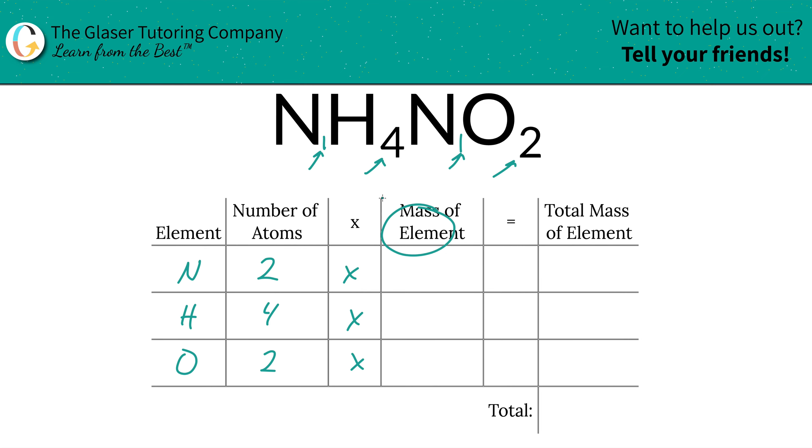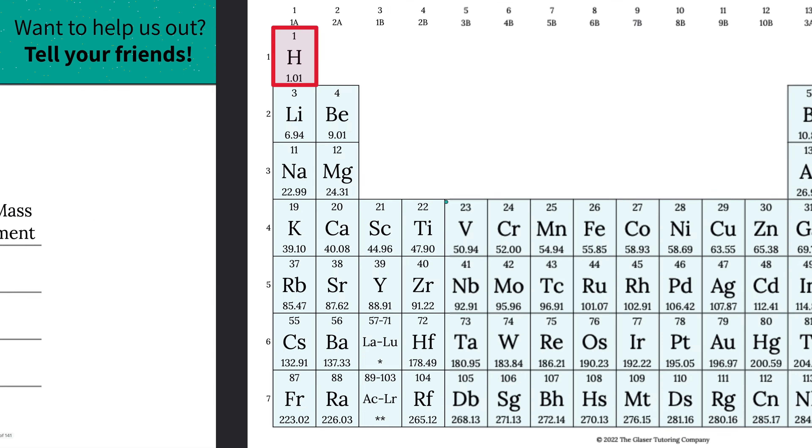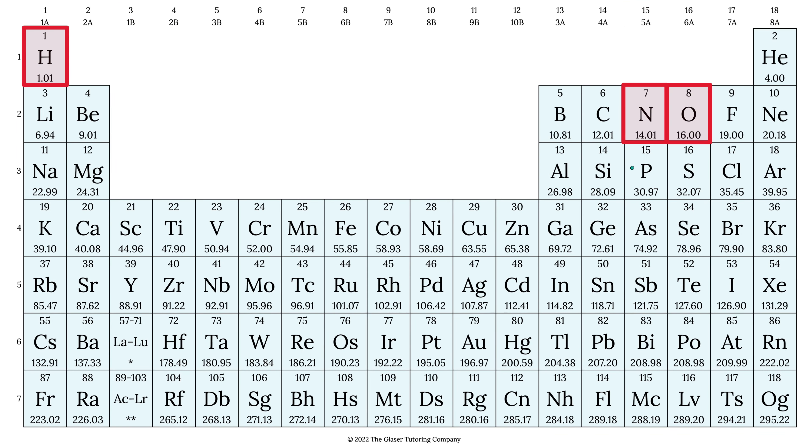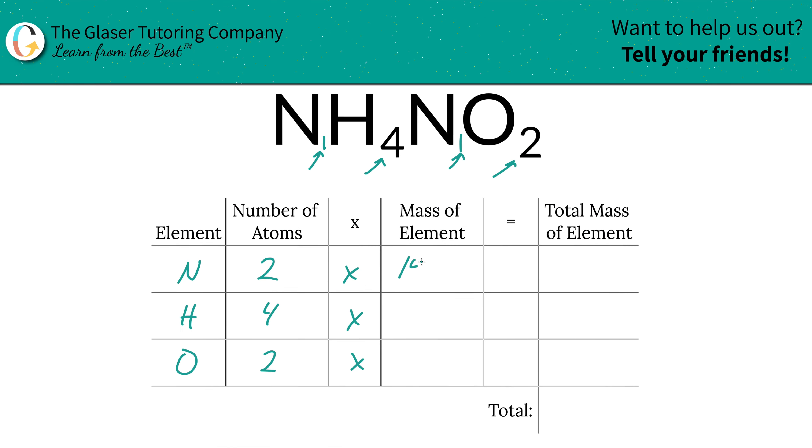Then we're simply going to multiply those number of atoms by the mass of each element. That's where the periodic table comes into play. So the mass of hydrogen is 1.01, the mass of nitrogen is 14.01, and the mass of oxygen is 16. So let's write that in. So 14.01 for nitrogen, 1.01 for hydrogen, and 16 for oxygen.